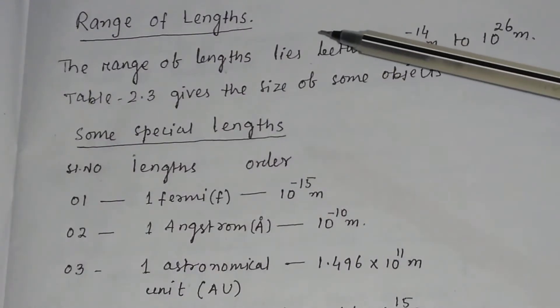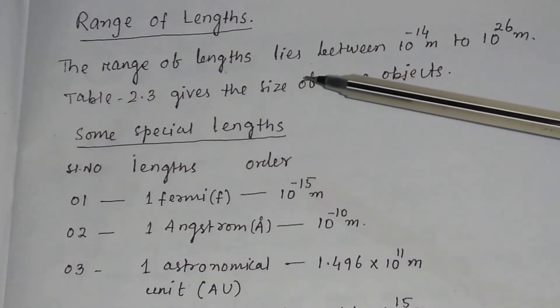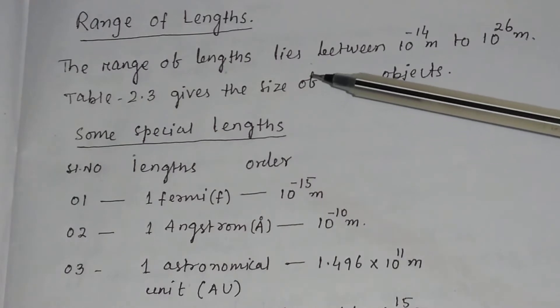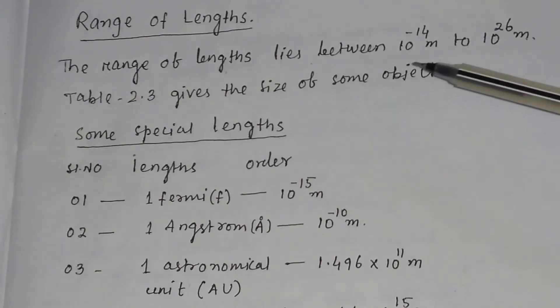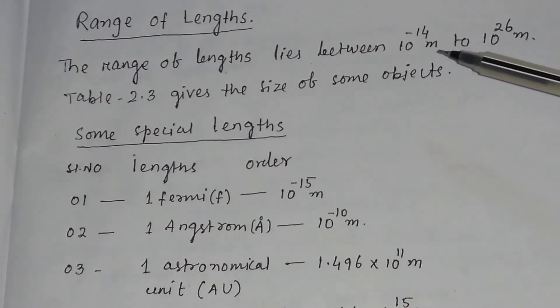The range of lengths in physics: we deal with various lengths whose range lies between 10 to the power minus 14 meter or 10 to the power minus 15 meter to 10 to the power 26 meter.